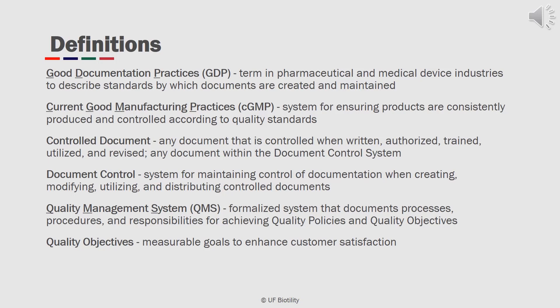Good manufacturing practices, or CGMP, is a system for ensuring products are consistently produced and controlled according to quality standards. A controlled document is a document that is controlled when written, authorized, trained, utilized, and revised. Document control is a system for maintaining control of all documentation when creating, modifying, utilizing, and distributing controlled documents.